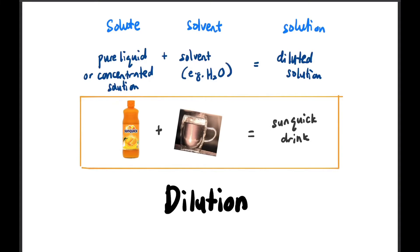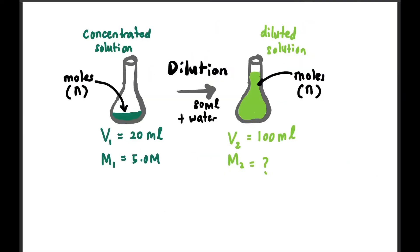For example, in this case I mentioned Sunquick drink. What actually happens is the dilution makes the concentration or the molarity of the solution become lowered or decreased. Let's have a look at this process. Kita ada satu solution yang concentrated ataupun pekat, volume dia 20 ml and then molarity dia 5.0 molar.